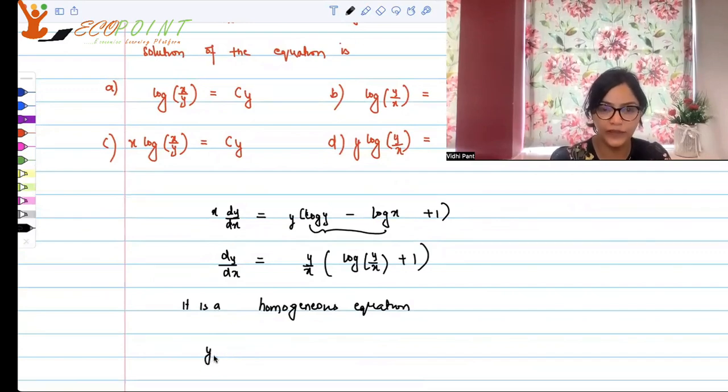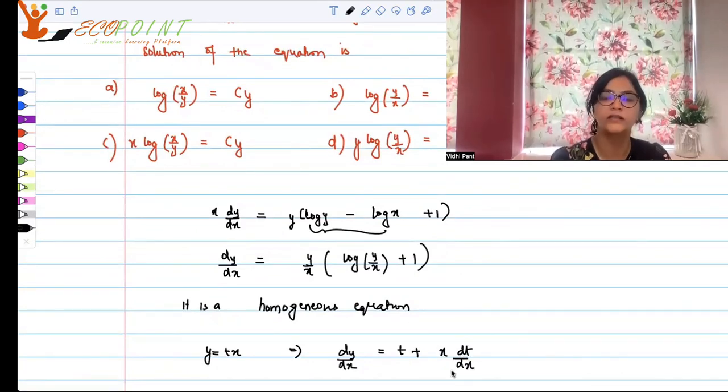Put y as tx and that will give you dy by dx is equal to dy by dx is equal to t plus x dt by dx. Okay.